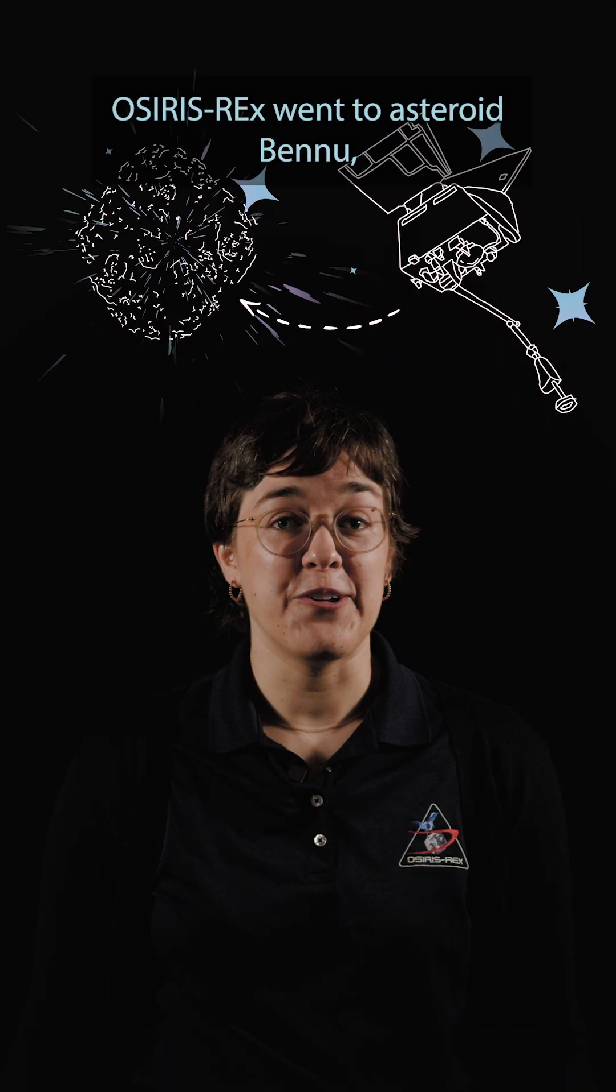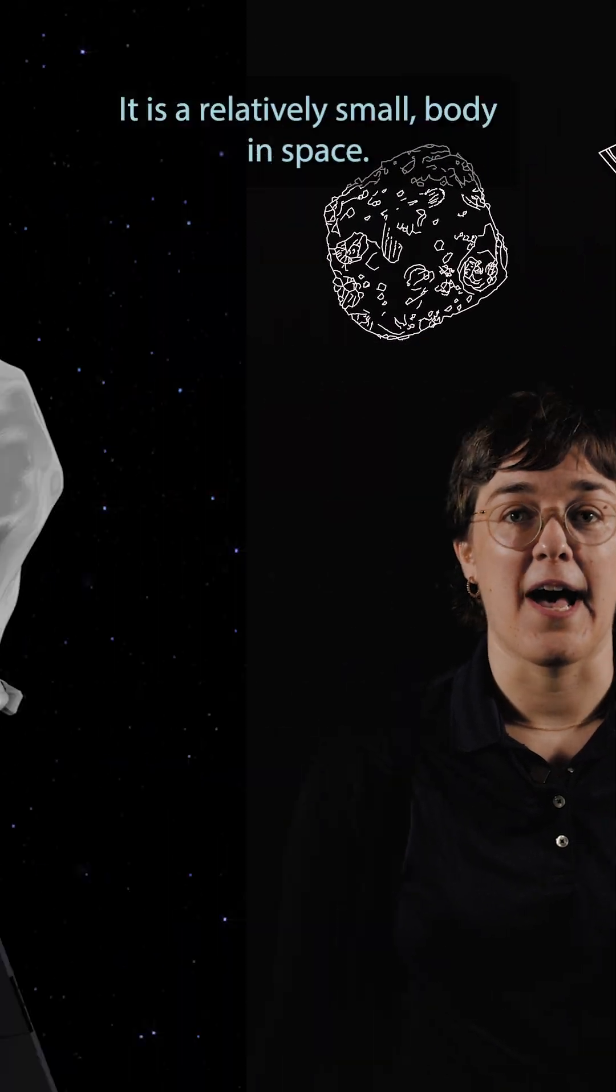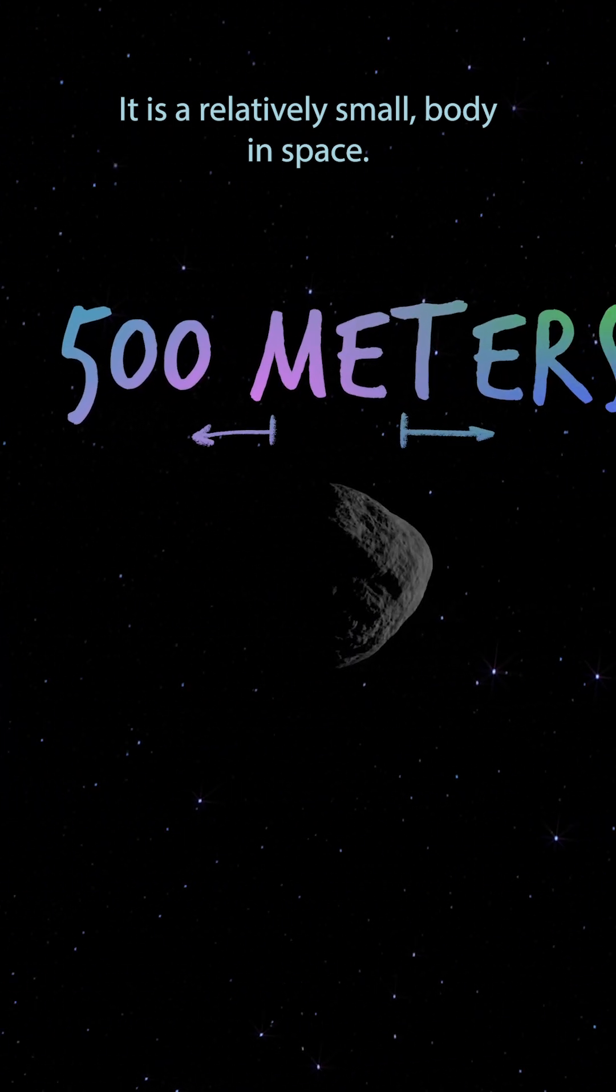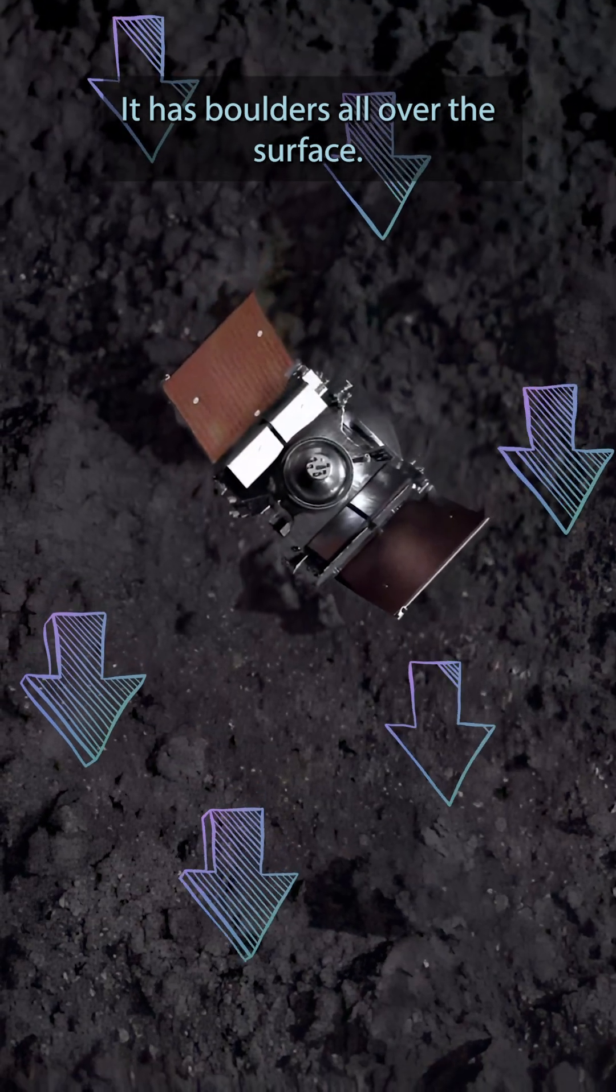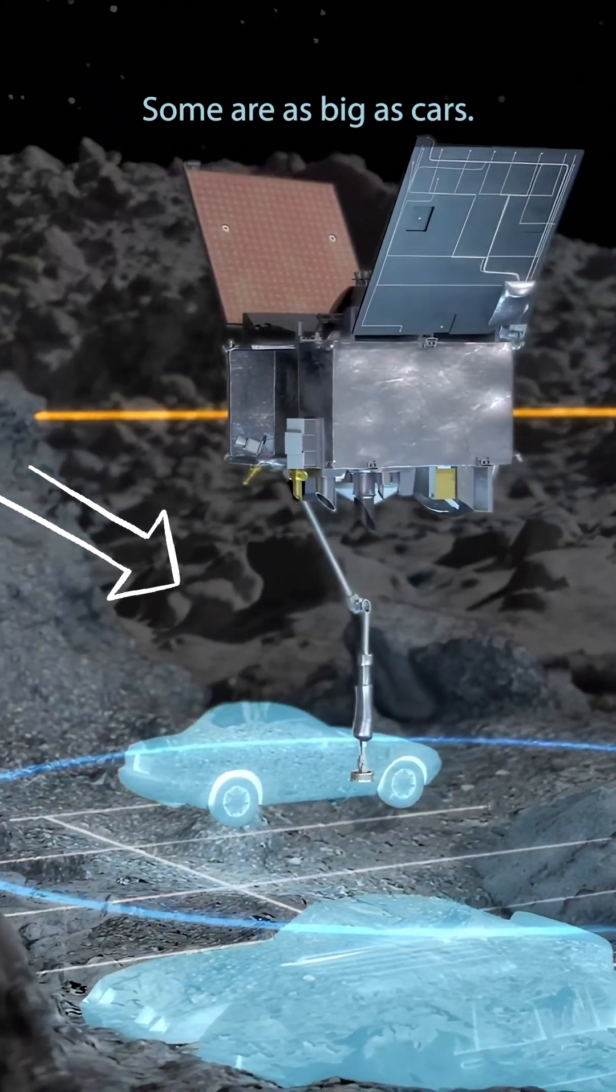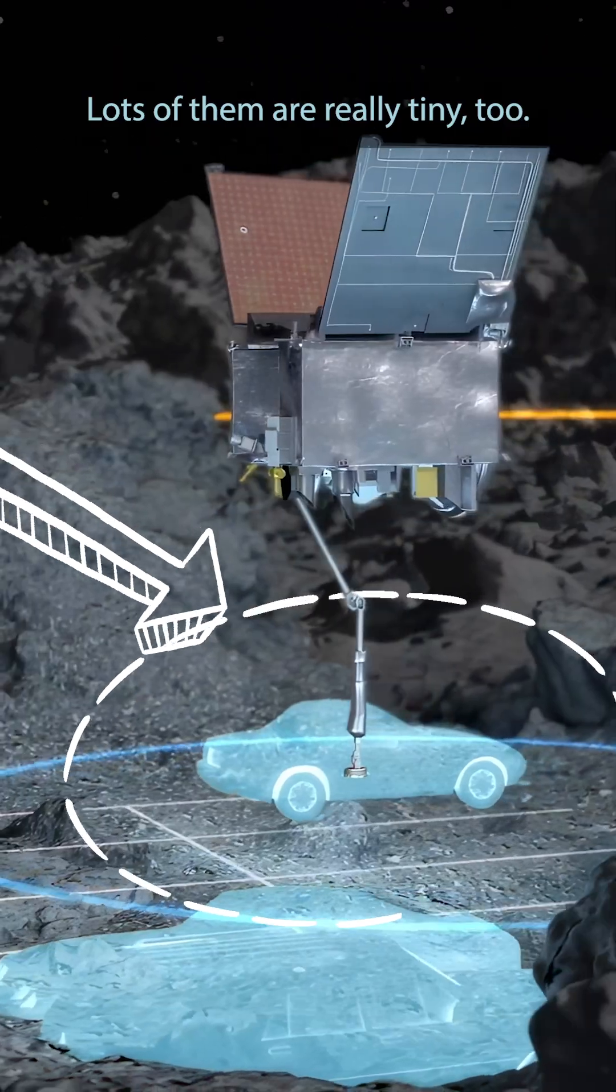OSIRIS-REx went to asteroid Bennu. It is a relatively small body in space. It is rocky. It has boulders all over the surface. Some are as big as cars, lots of them are really tiny too.